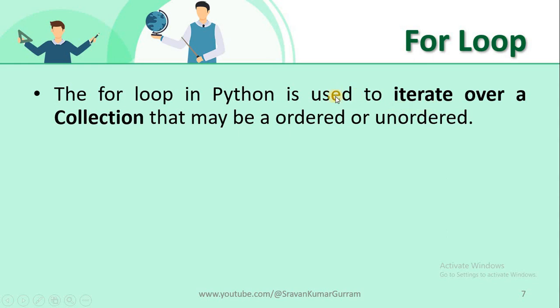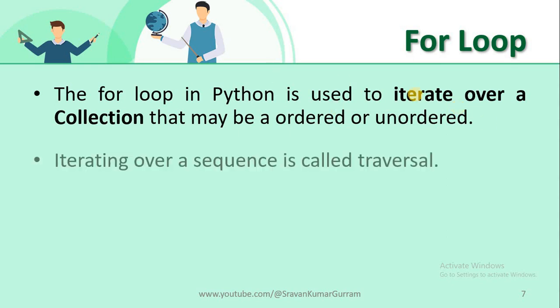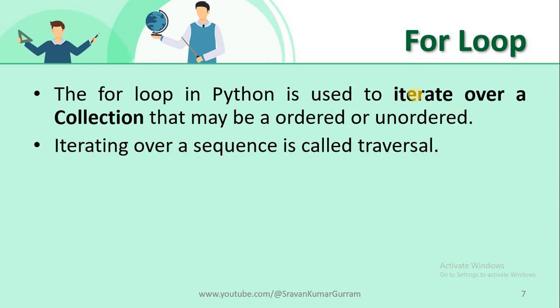The for loop in Python is used to iterate over a collection or a sequence. That collection may be an ordered collection or an unordered collection. Iterating over a sequence or a collection is called traversal — visiting each element is called traversal.